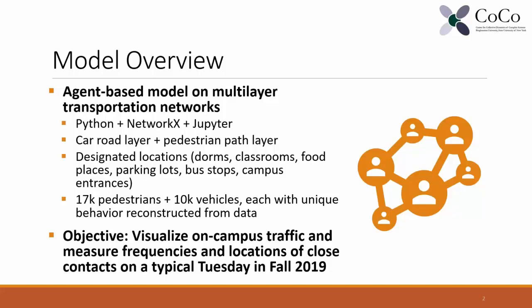Specifically for this simulation, we represent a road network for vehicle transportation and pedestrian pathways for individual pedestrians walking on campus. In the multi-layer transportation networks, we designated specific locations such as dormitories, classrooms, food places, parking lots, bus stops, and campus entrances, so that each individual agent's behavior is specifically moving between those key locations. In total, this simulation model simulates more than 17,000 pedestrians and 10,000 vehicles altogether.